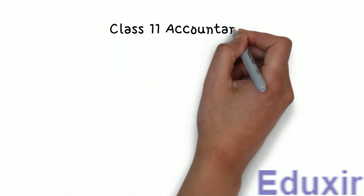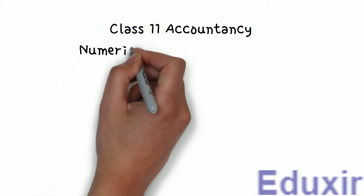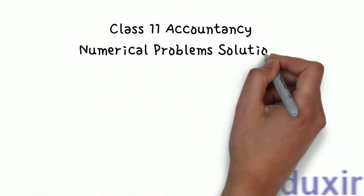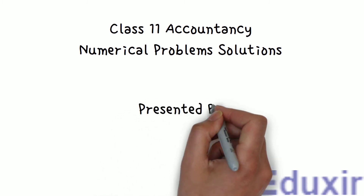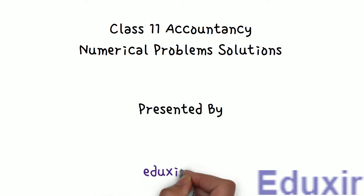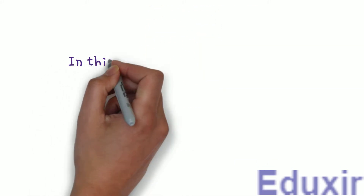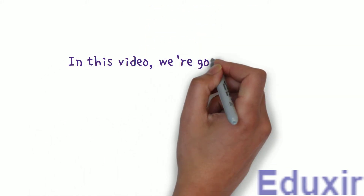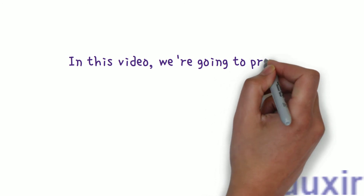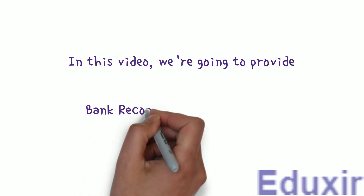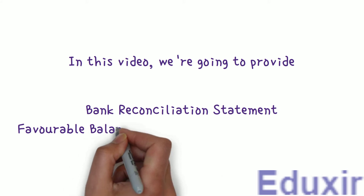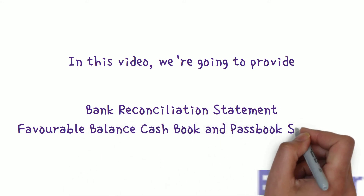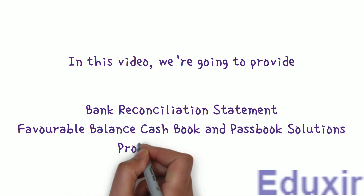Class 11 Accountancy Numerical Problems Solutions, presented by Edixit.com. In this video, we are going to provide Bank Reconciliation Statement - Favorable Balance Cashbook and Passbook Solutions, Problem 2 Solution.